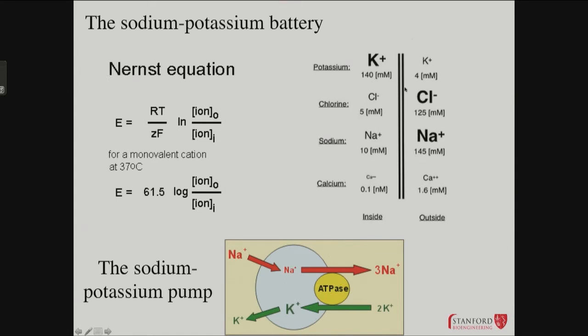Potassium is high inside the cell, low outside—140 versus 4 millimolar. Sodium is the opposite. Calcium, there's a huge gradient. Actually, this is a typo—this should be 0.1 micromolar or about 100 nanomolar inside, but still very low. It's about 1.6 millimolar outside, so you have a very remarkable calcium gradient as well.